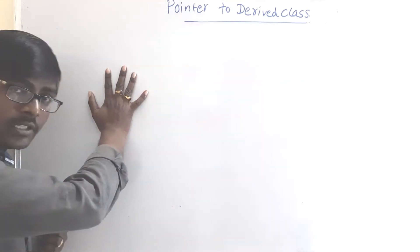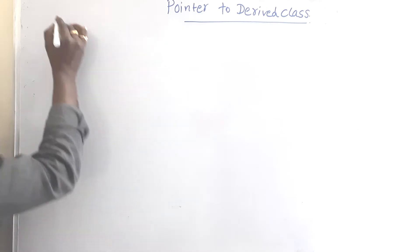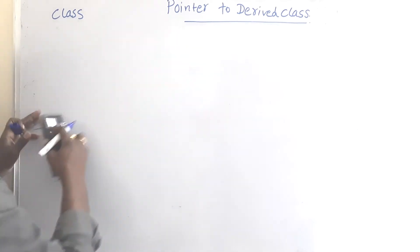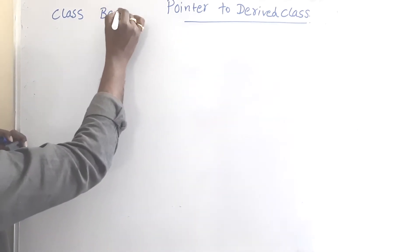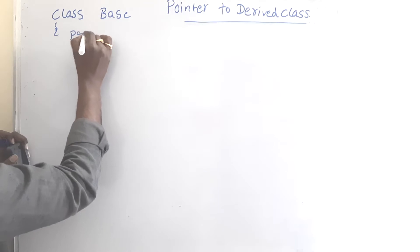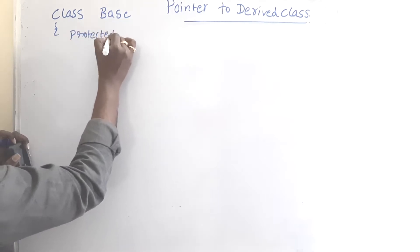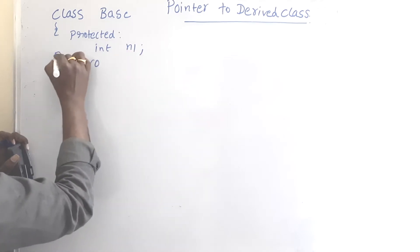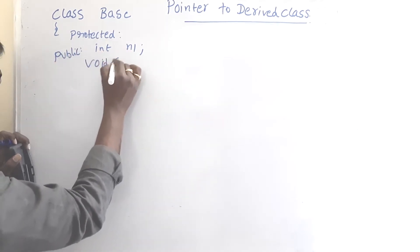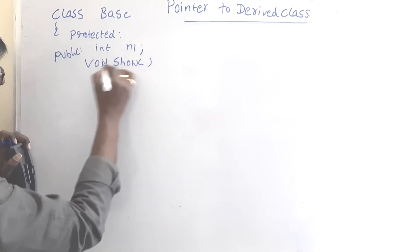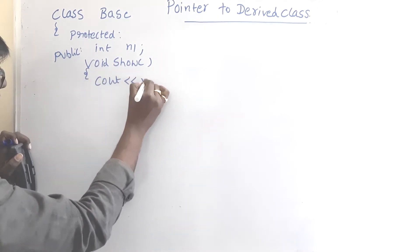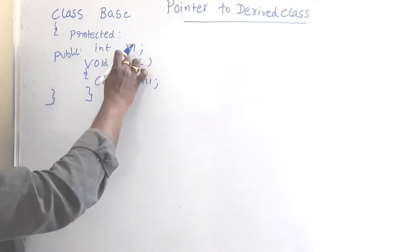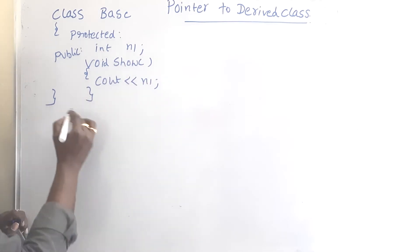Consider one simple inheritance program. A very simple program: class base, for easy identification. Protected int n1, public void show, cout n1. So what I am doing, simply I am declaring a variable n1 and then print the variable.